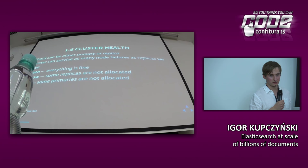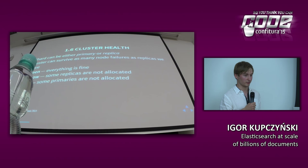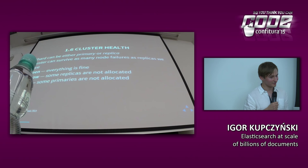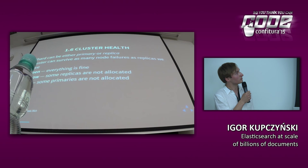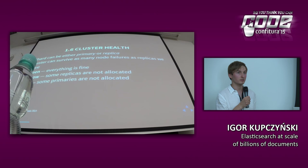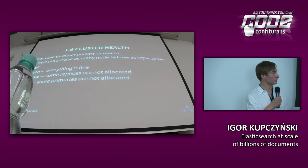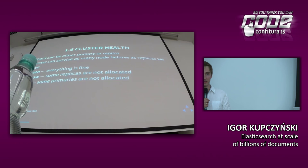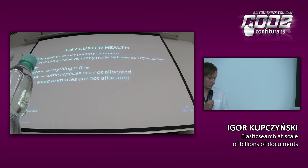An important metric in Elasticsearch is cluster health, which has one of three states: red, yellow, or green. Green means everything is fine. Yellow means some replicas are not allocated, but all primary shards are present — so some indices may not have a copy, but we're still servicing requests. Red means some primary shards are not allocated, so we cannot index new documents for those indices and will return partial results for some queries.